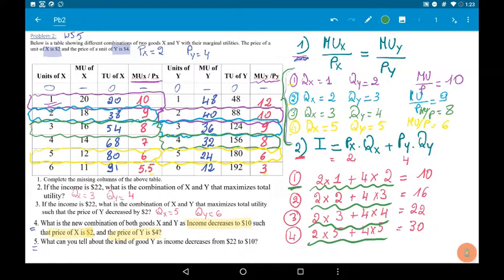If we consume combination 1, basket 1, we spend $10, which is our income. So, the new optimal combination is this one.